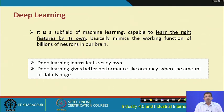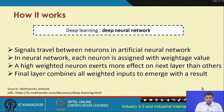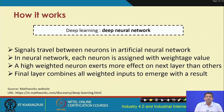Deep learning gives improved performance with respect to accuracy when data volume and dimensionality increase. One of the very popular techniques in deep learning is the deep neural network, which is based on artificial neural networks but goes deeper. In a deep neural network, signals travel between different neurons and layers. Each neuron is assigned a weighted value — a highly weighted neuron exerts more effect on the next layer — and the final layer combines all the weighted inputs to produce a result.